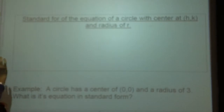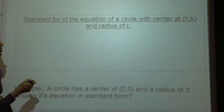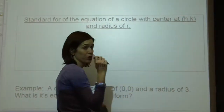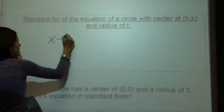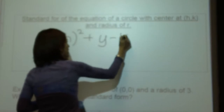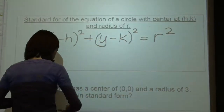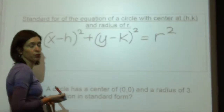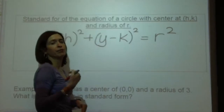What we're going to talk about is the equation of a circle. The standard form — the standard equation for a circle with a center at (h, k) and a radius of r — is going to look like this: x minus h squared plus y minus k squared equals r squared. The h and the k will be our center, and the r — not r squared, but r — will be my radius.